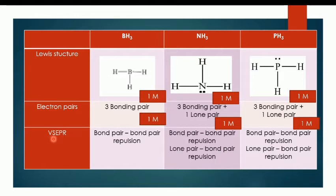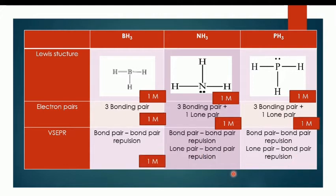For VSEPR, you must explain the repulsion only. The repulsion in PH3 is bonding pair–bonding pair repulsion. For NH3, there is bonding pair–bonding pair repulsion and lone pair–bonding pair repulsion. For PH3, it is also bonding pair–bonding pair repulsion. You will get one mark for each — one here, one here, and one here. This is a nice mark.